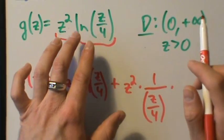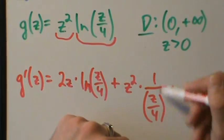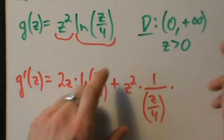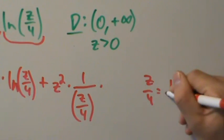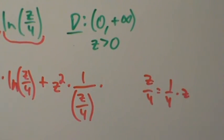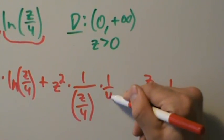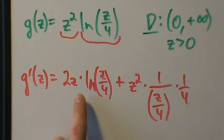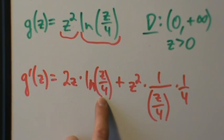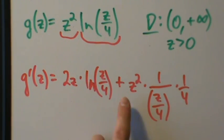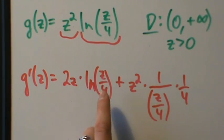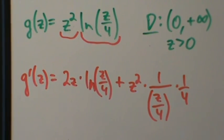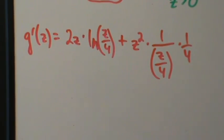Chain rule says: derivative of the outer function evaluated at the inner, which is 1 over z over 4, times the derivative of the inner function. The inner function is z over 4, which is just one-fourth times z, so its derivative is just one-fourth. So to recap: derivative of the first times the second, plus the first — z squared — times the derivative of the second, which is 1 over z over 4, times one-fourth.